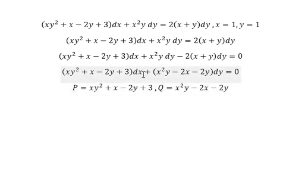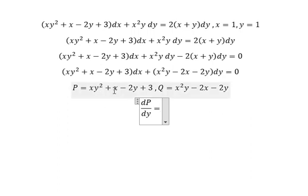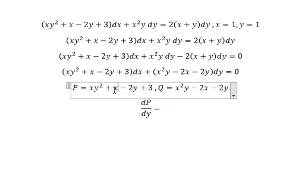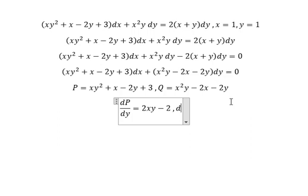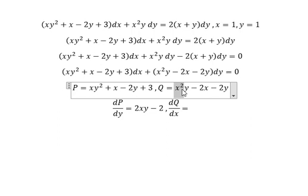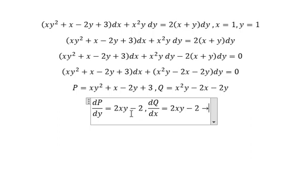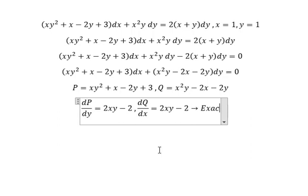We have dx, that means we need to do first the derivative of M with respect to y. This one we have 2y, and this one and this one they don't have y, so you got zero. Because we have dy, that means we need to do the derivative of N with respect to x. This one we have 2x, and this one we have number one. So we can see that this one and this one they are the same, so that is about exact.